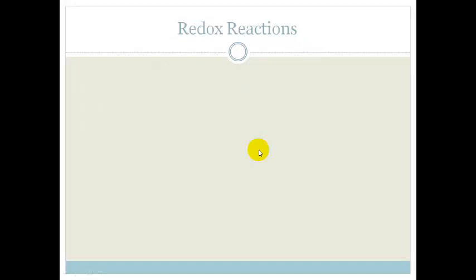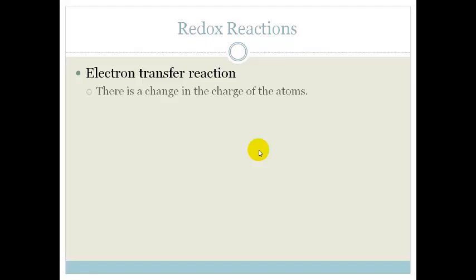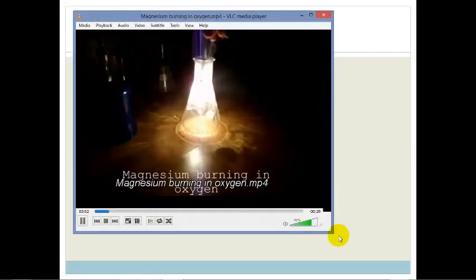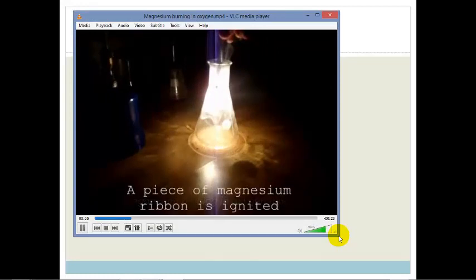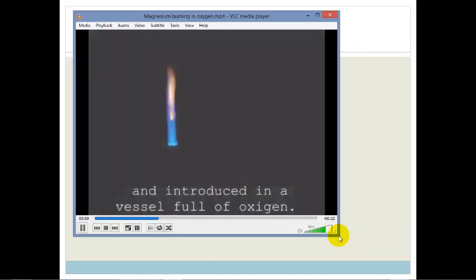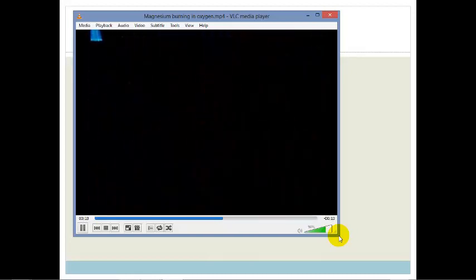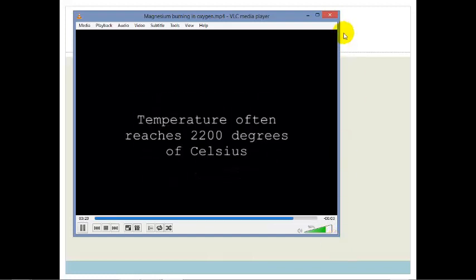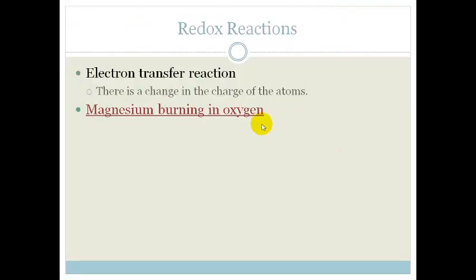Now let's look at redox reactions. Redox reactions basically require the transfer of electrons. So there is a change in the charge of atoms. So let's look at this reaction. Magnesium is burning in oxygen.